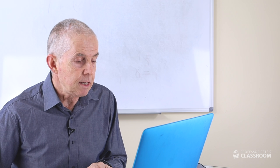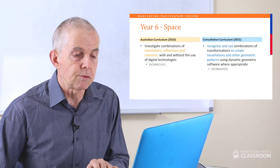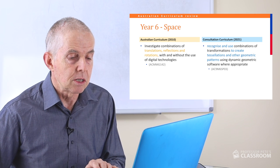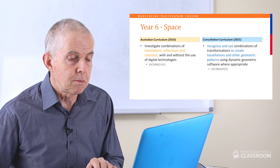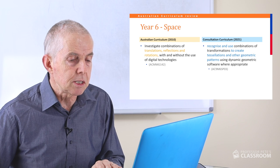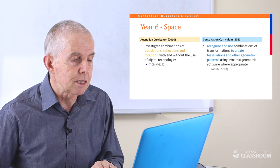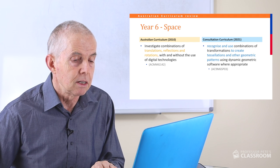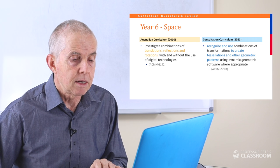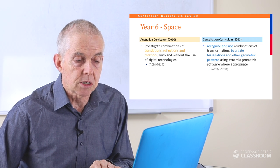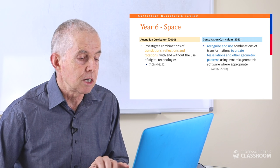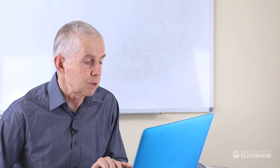Space number three: recognise and use combinations of transformations to create tessellations and other geometric patterns using dynamic geometric software where appropriate. This is quite similar to the one before. It doesn't list the transformations — the old one mentioned translations, reflections and rotations. Creating tessellations is new content and a good idea. So I like this one.